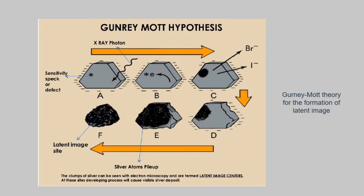This is the Gurney-Mott theory of latent image formation. A is photon absorption — absorption of a light photon by a bromide ion frees the extra electron. B is electron trapping — the electron gets trapped by the sensitive spot and causes the sensitive speck to become negatively charged.